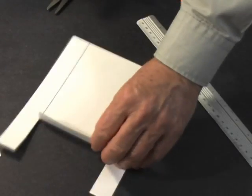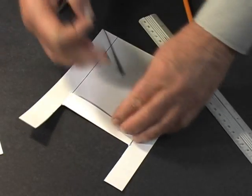Fold this piece down flat and tape it in place. This adds some stiffness to the structure.